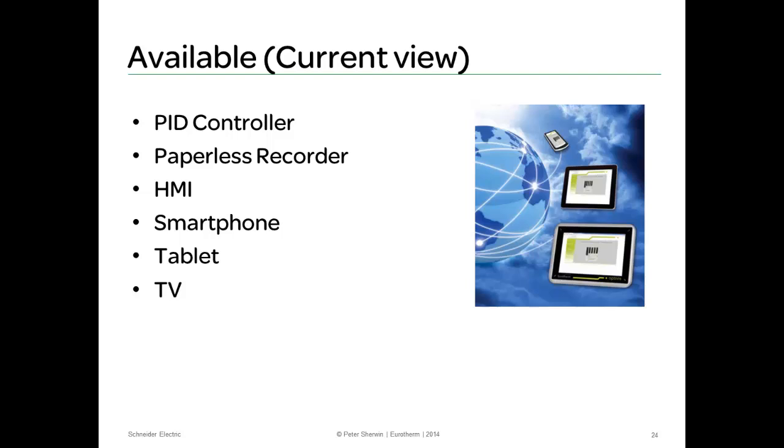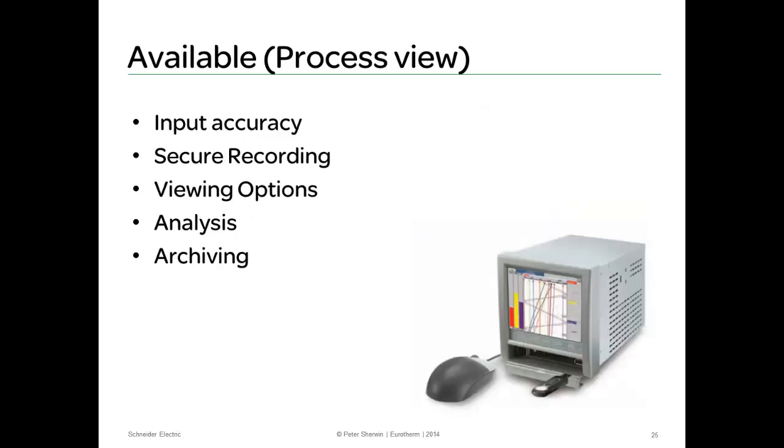Now moving to the next section, data availability. Today there are more choices than ever to be able to display and view current process data at or remote from the process equipment. Controllers with better displays or large screen HMIs at the machine. And for remote viewing, use of smartphones, tablets or large screen TVs covering multiple processes. Not only do you want to see the instant process information and comparing this against set points, but you also want to be able to see trends and history. This is commonly available in most SCADA and process recorder systems.